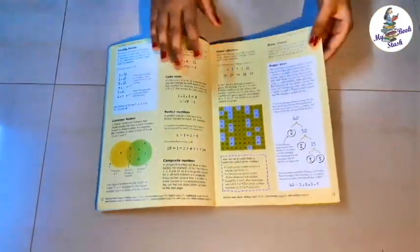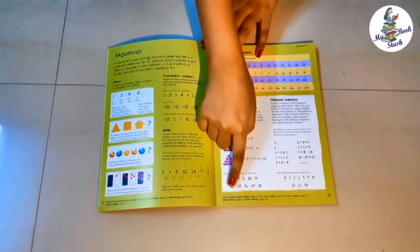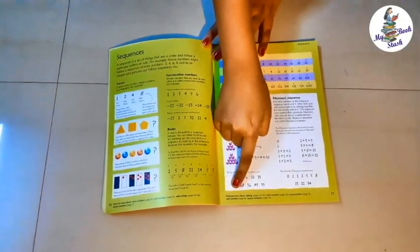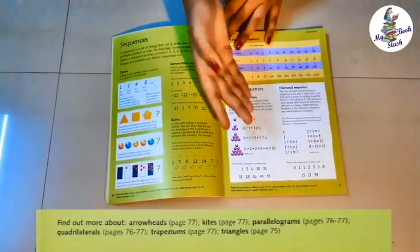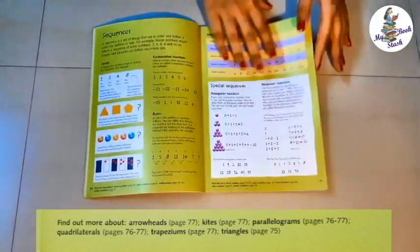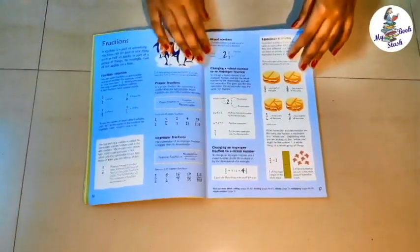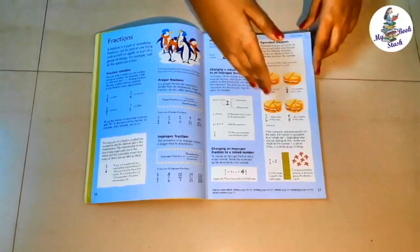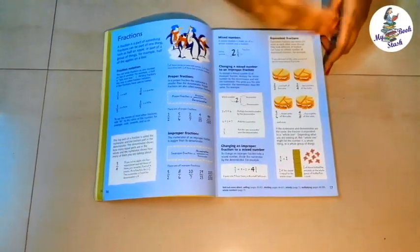At the bottom of every page, we see a footnote find out more about. It gives us cross-references from other pages of this book. Simple and self-explanatory pictures make it very easy to understand the topic.